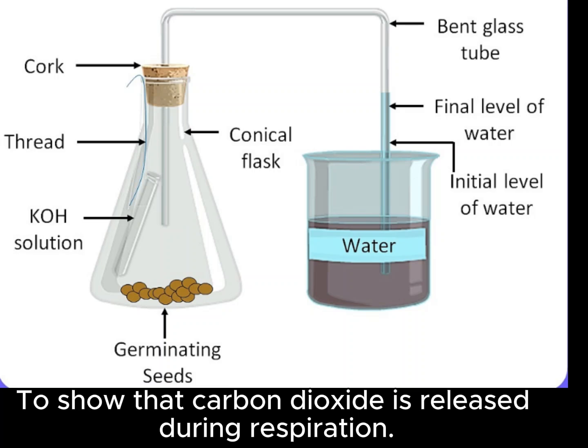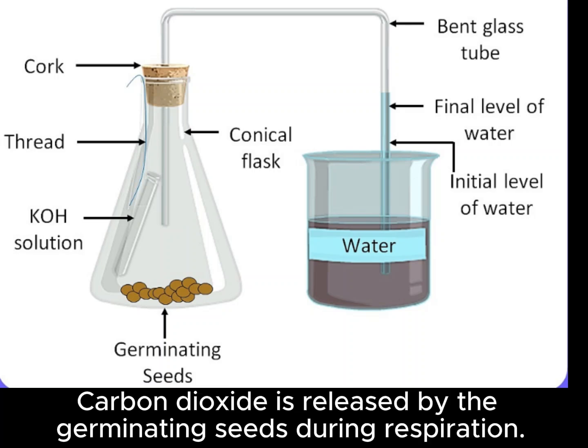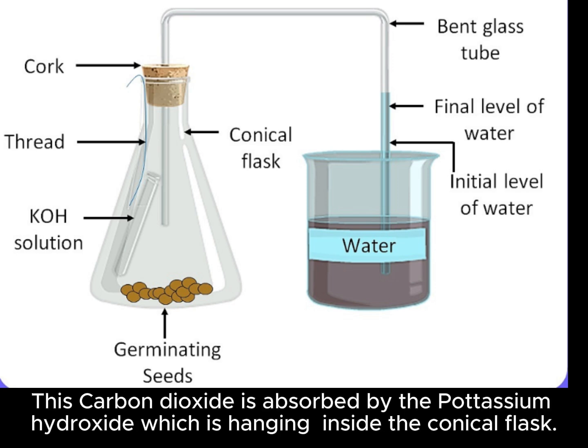To show that carbon dioxide is released during respiration. Carbon dioxide is released by the germinating seeds during respiration. This carbon dioxide is absorbed by the potassium hydroxide which is hanging inside the conical flask.